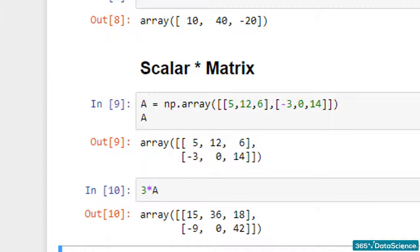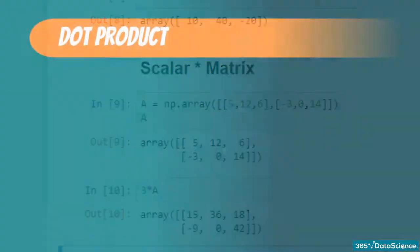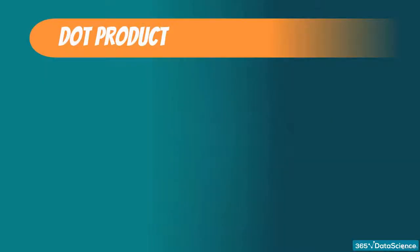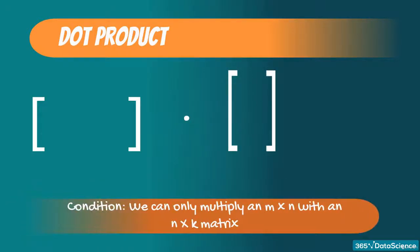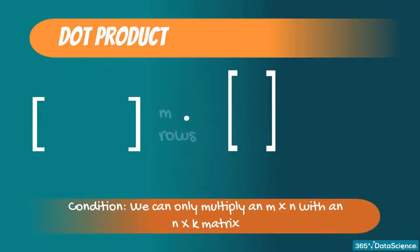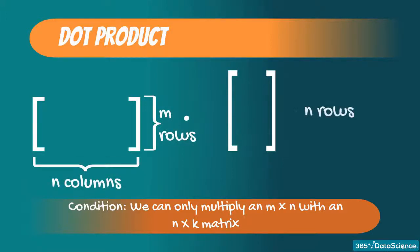But how do we multiply a matrix with another matrix? Using the same concept, the dot product, we could multiply two matrices. There is a compatibility measure here, too. We can only multiply a matrix of dimensions m by n with a matrix of dimensions n by k. Basically, the second dimension of the first matrix has to match the first dimension of the second matrix.